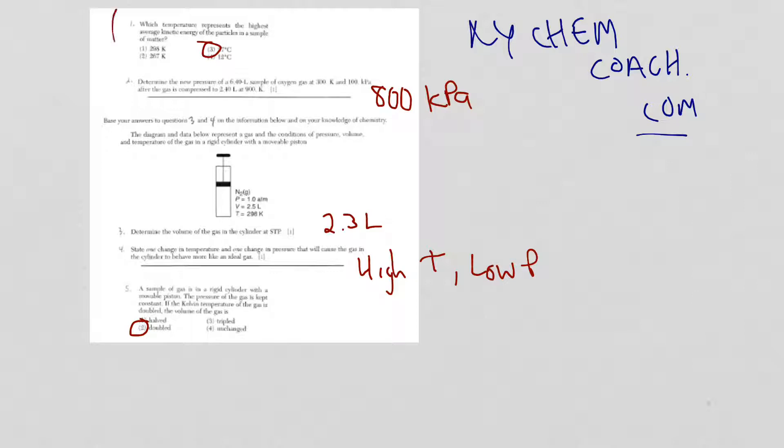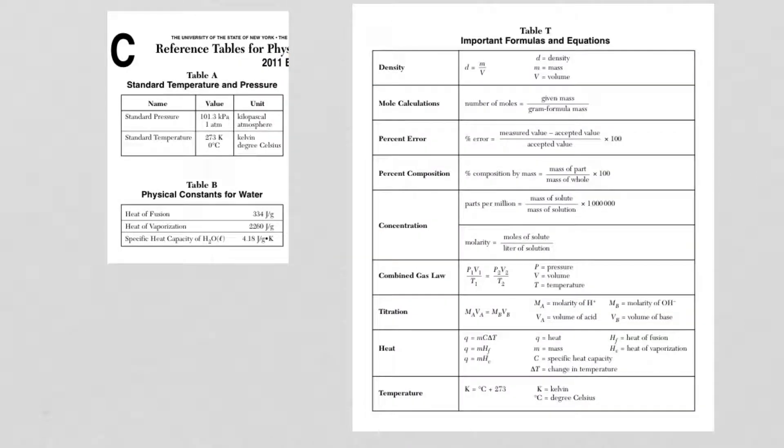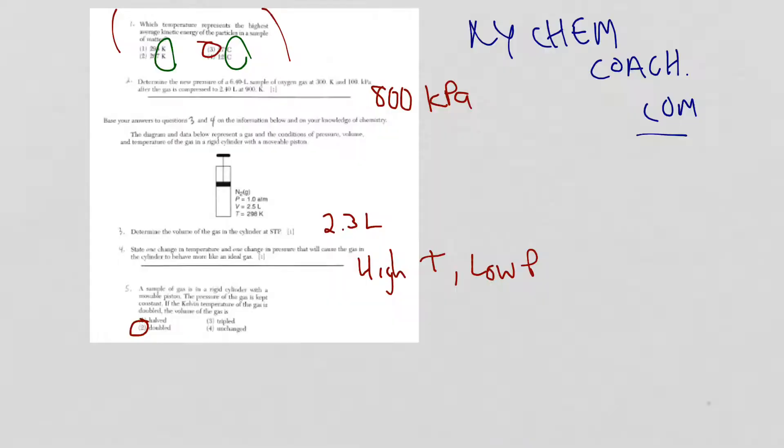For number one, the temperature that represents the highest average kinetic energy is of course the highest temperature. The problem is that all units should be either all in Kelvin or all in Celsius. If you go to reference table T, it's easier to convert Celsius to Kelvin because all you're doing is adding 273. When you do that, you'll find that choice 3 is the best answer.